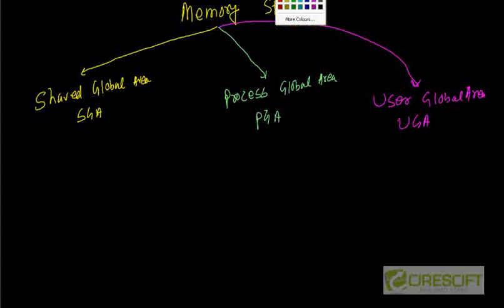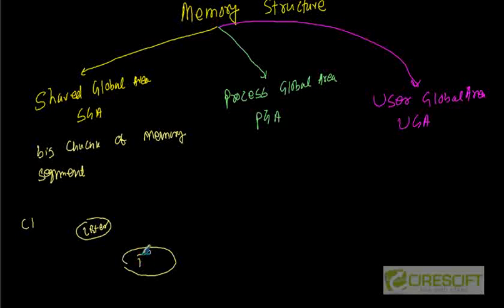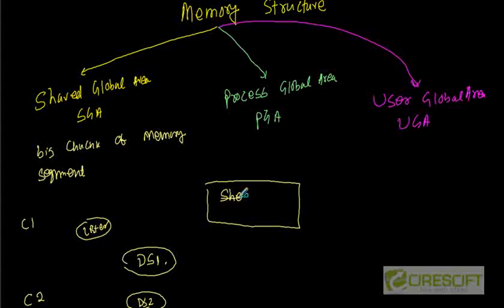The Shared Global Area is a big chunk of memory which all Oracle processes can access at any point of time. Whenever a client request comes, the listener is going to fork a process called a dedicated server process. So let's say this is DS1. Another client C2 comes and the listener forks another dedicated server DS2. Both DS1 and DS2 can access this shared chunk of memory called SGA.